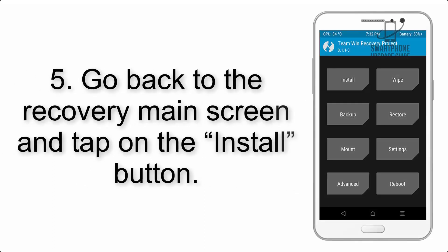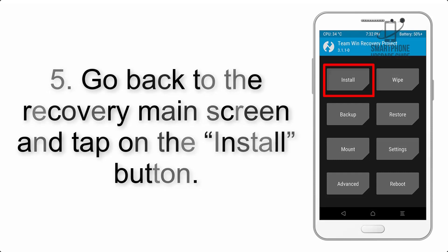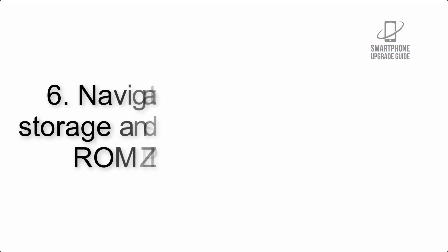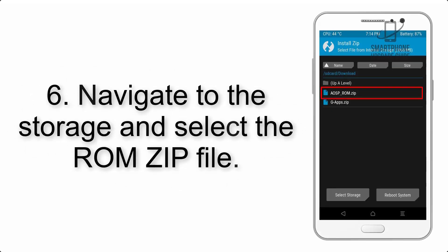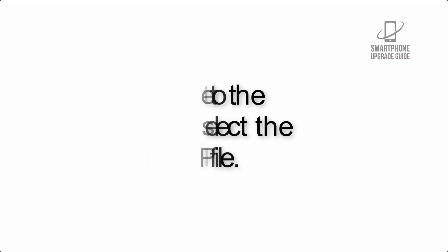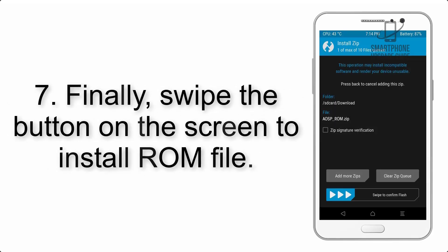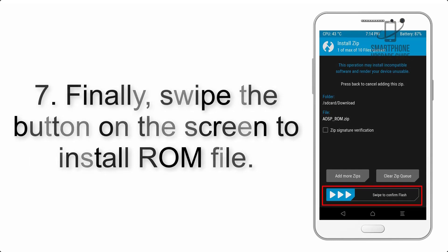Step 4: Swipe the button to wipe the device. Step 5: Go back to the recovery main screen and tap on the Install button. Step 6: Navigate to the storage and select the ROM zip file.